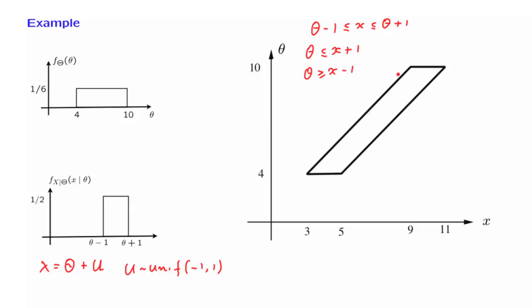So here, we plot the line where theta is equal to x plus 1. And here, we plot the line on which theta is equal to x minus 1. And these two inequalities that we got here tell us that we need to live somewhere in between those two lines. In addition, we have the fact that theta lives between 4 and 10, and that places these two limits as well. So to summarize, this shape here is the set of all possible x's and thetas. Outside this shape, the joint PDF is going to be 0. What is it going to be inside here?